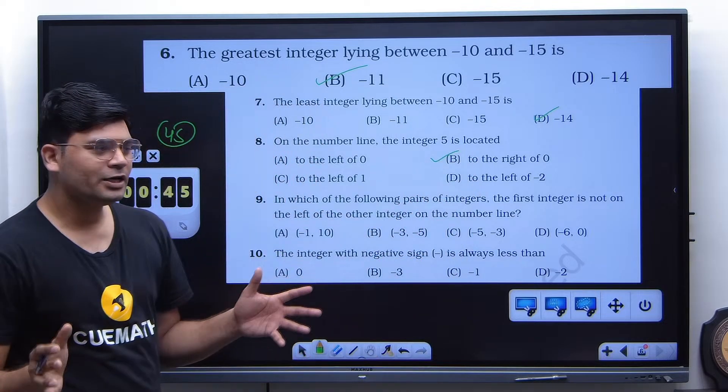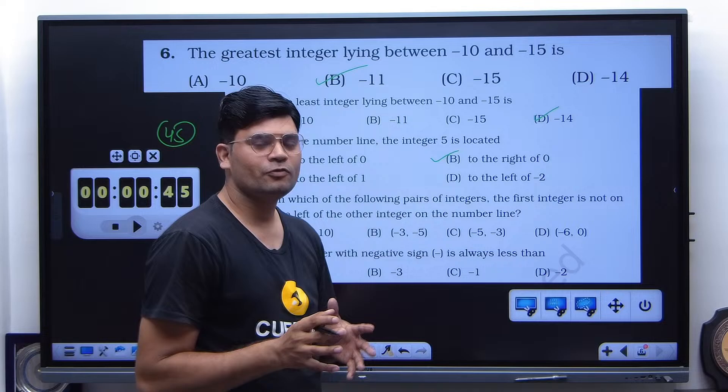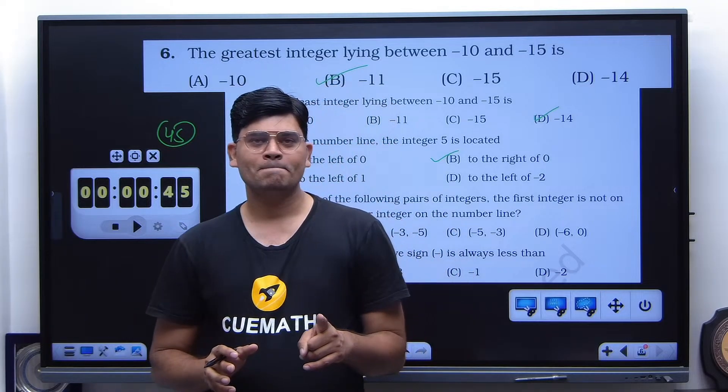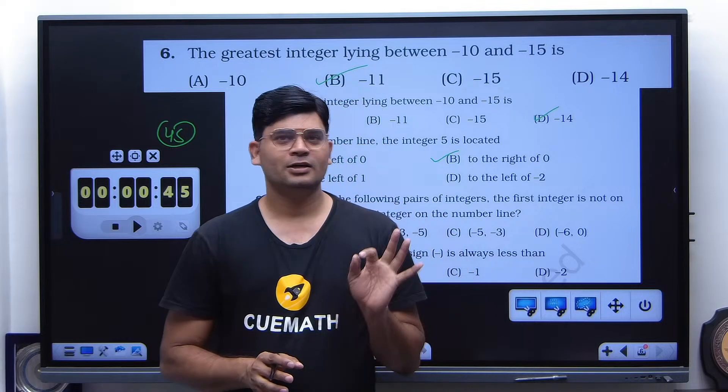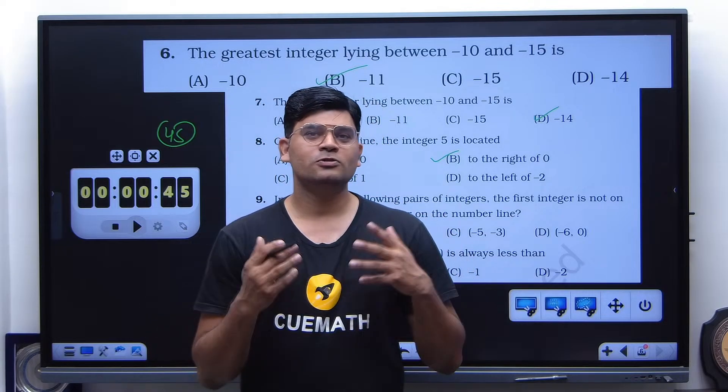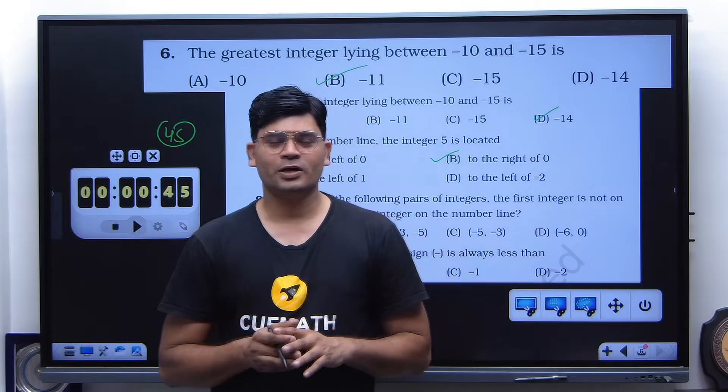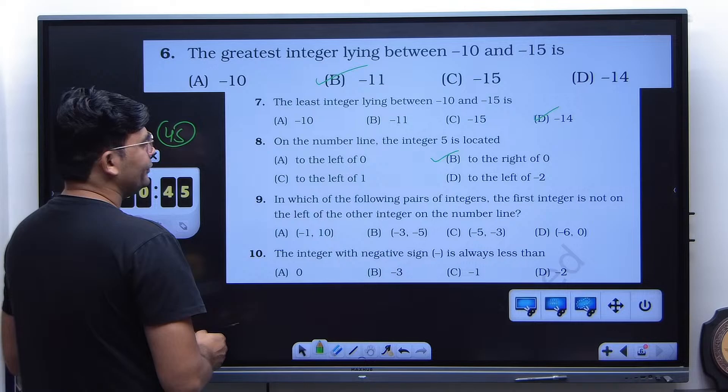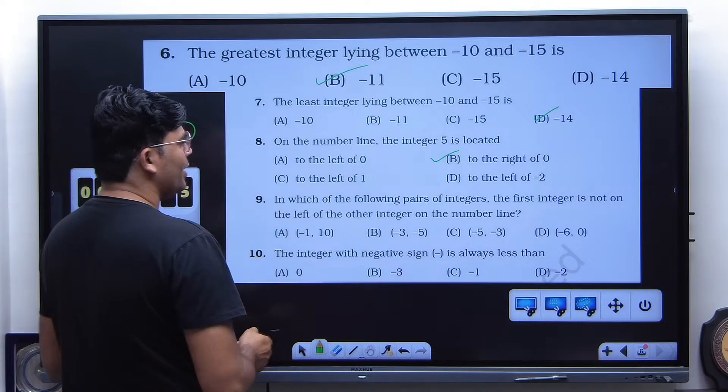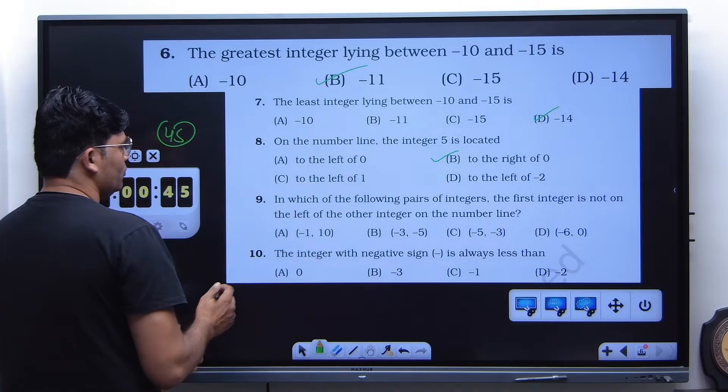To not get confused, you can see the phonetic language. A stands for alpha, B stands for bravo, C stands for charlie, D stands for delta. You can also say bravo, delta, charlie, alpha. On the number line, the integer 5 is located to the right of zero. For the ninth one, bravo. Bravo.